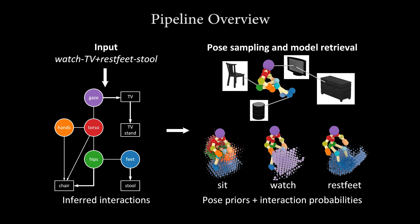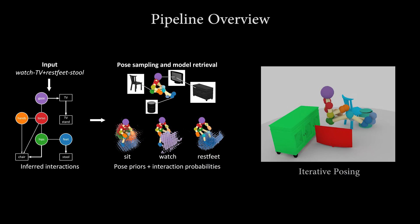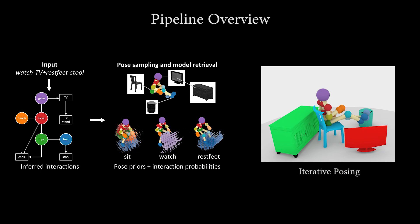To generate interaction snapshots, we retrieve an appropriate piegraph given an input action, and iteratively sample it to get a high likelihood pose in object arrangement.